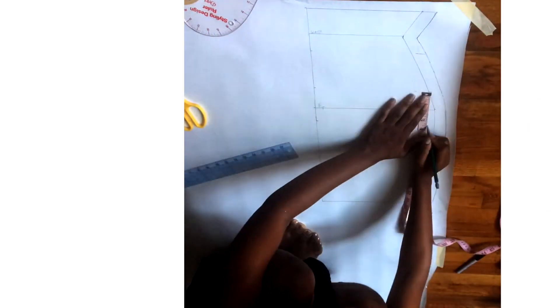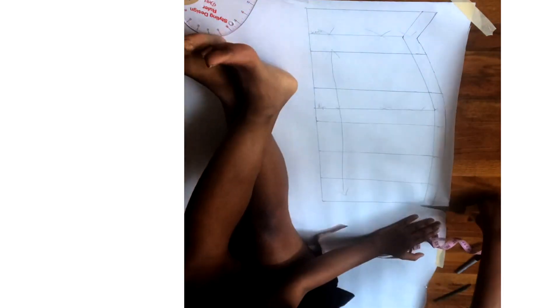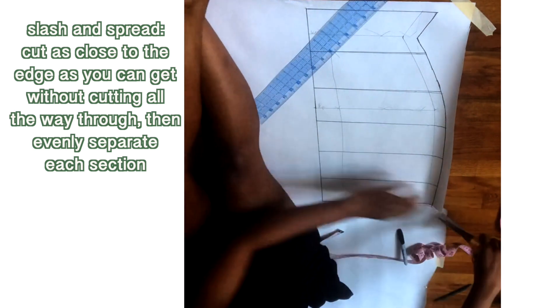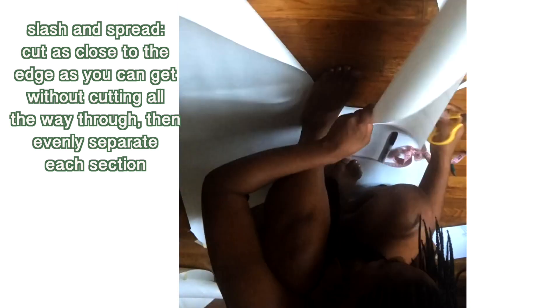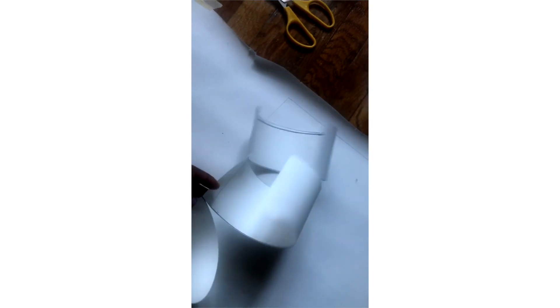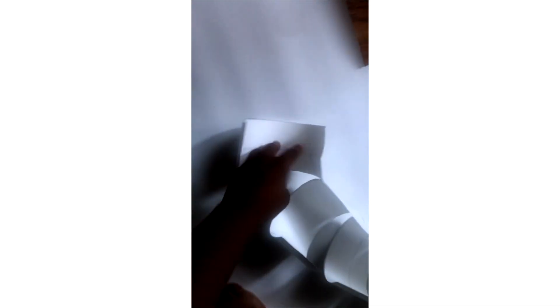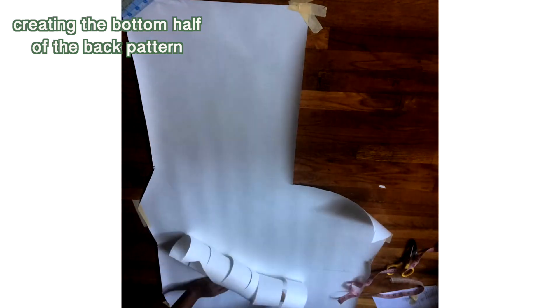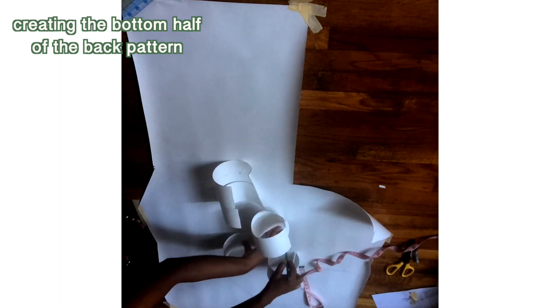Here I'm dividing the bottom of the back pattern into six equal sections, and then I'm going to basically do the slash and spread method as I did before with the front of the dress. Here I'm just cutting it out and cutting out each section. And so here I just started tracing the slashes for the bottom of the back of my pattern. Similar to what I had done before, here I'm just separating each of the six panels and then I'm tracing it so that I can form a curve for the pattern.